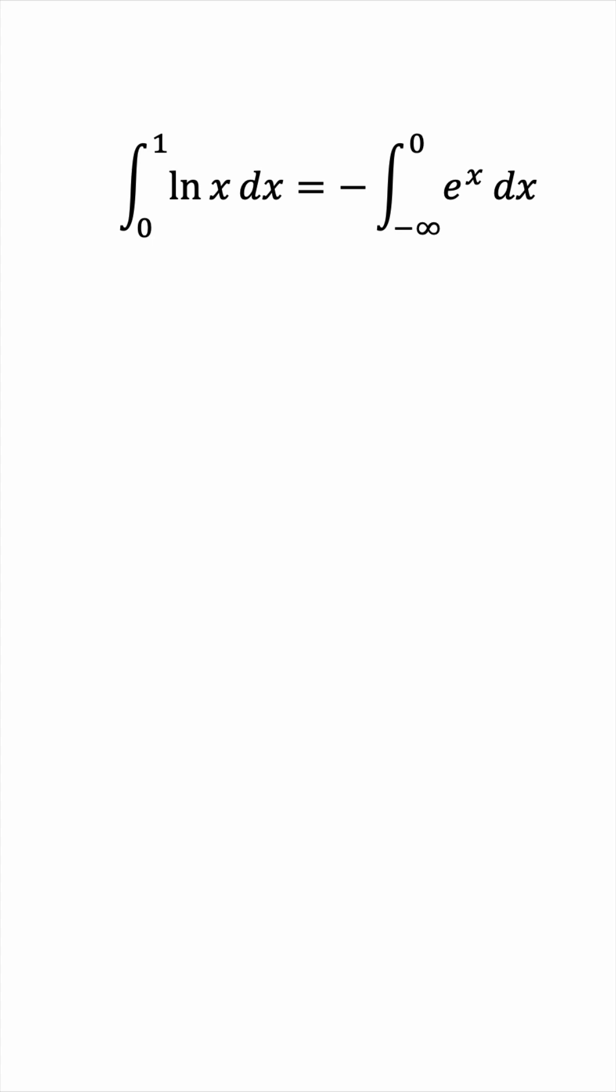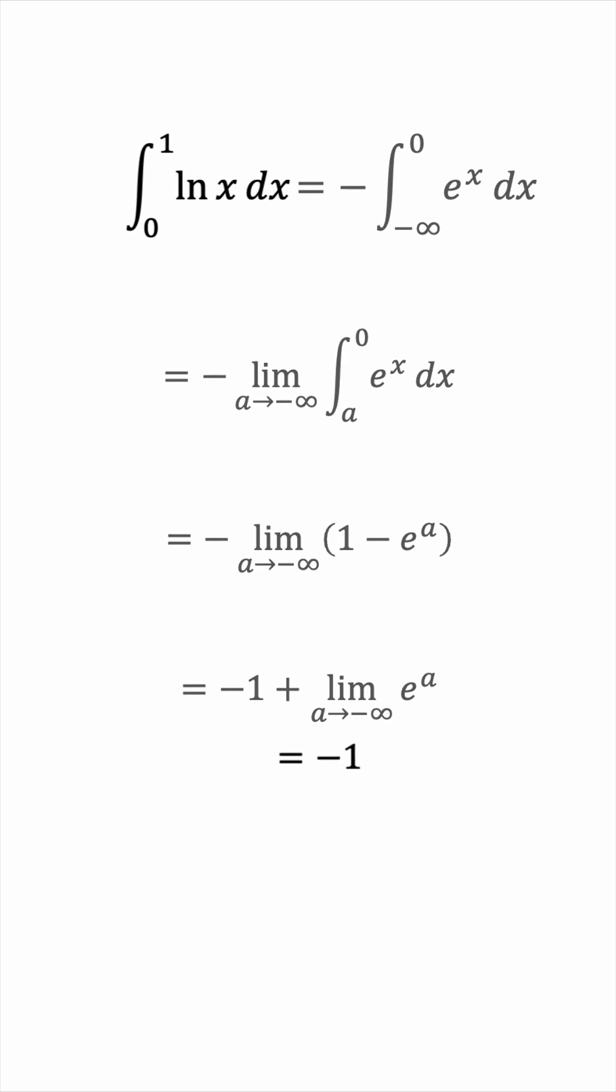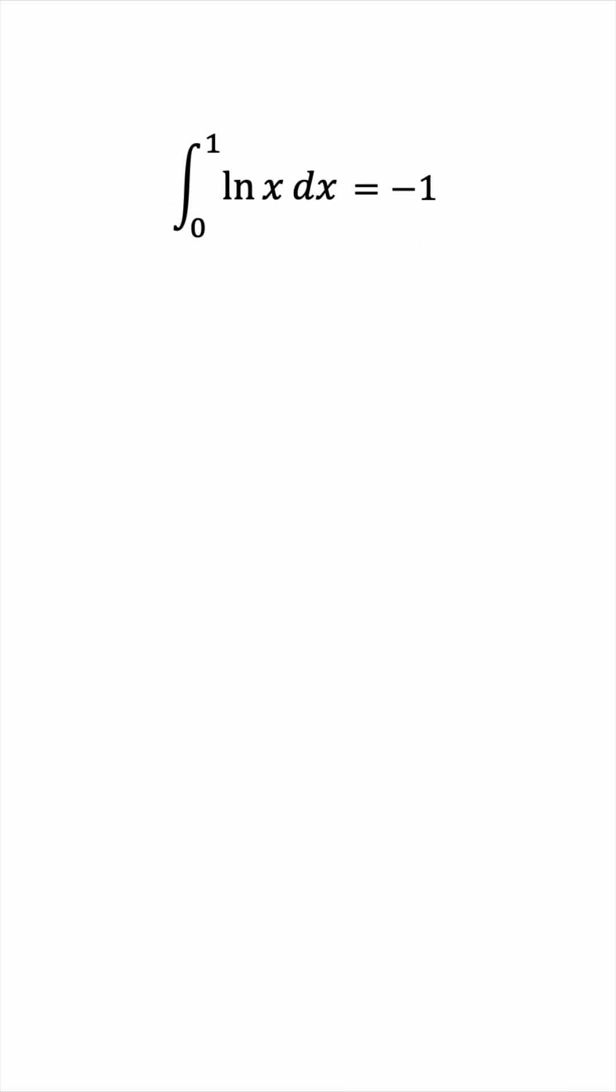Now we can evaluate this integral very easily by taking the limit first, because it's still improper since it has infinity in its bounds. The antiderivative is very easy to find, and then we'll plug in the limit and get negative 1 as our solution. So the integral of the natural log from 0 to 1 converges to negative 1.